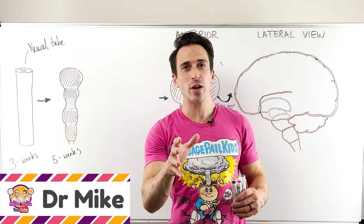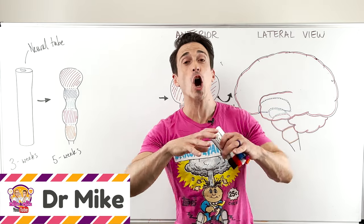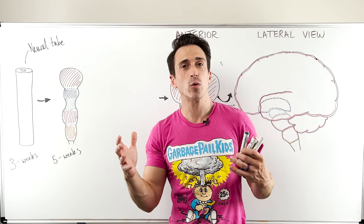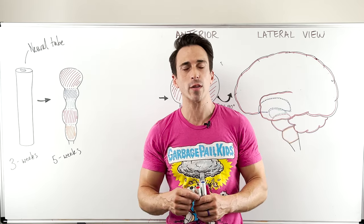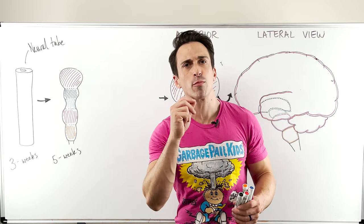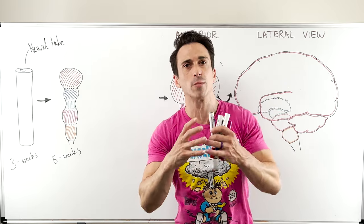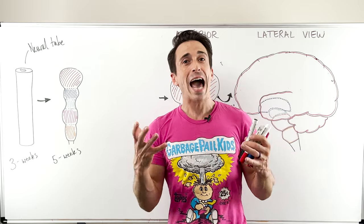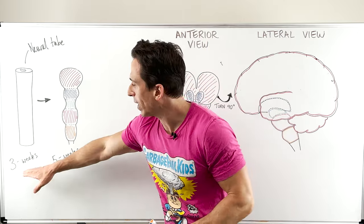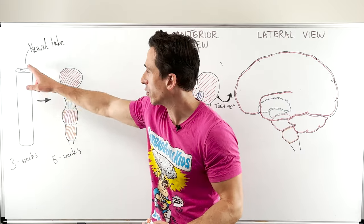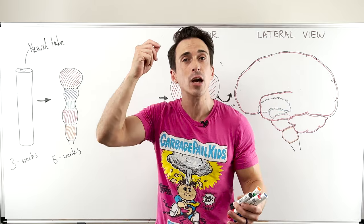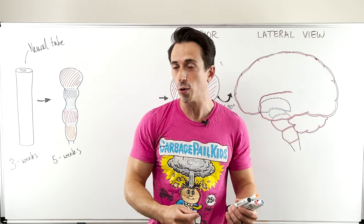Hi everybody, Dr. Mike here. In this video we're going to take a look at an overview of the brain — the development of the brain and also important structures of the brain and their relevant functions. To begin, you need to understand that the brain with all of its convolutions and complexities actually began as a hollow tube. At around about three weeks gestation we have this hollow tube called the neural tube that will ultimately become the brain, brainstem and spinal cord.